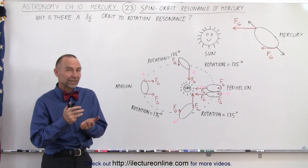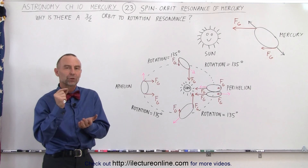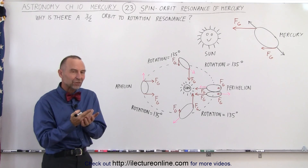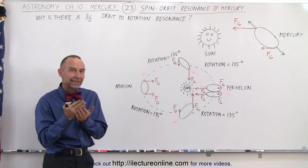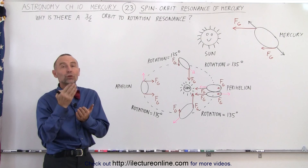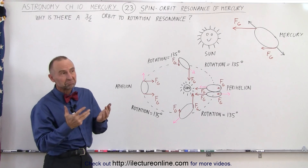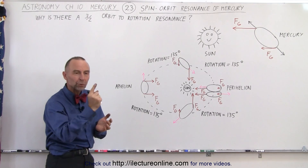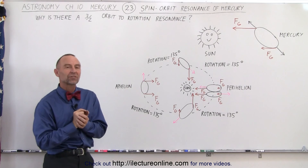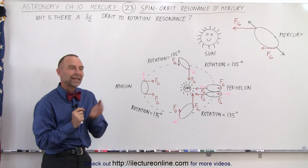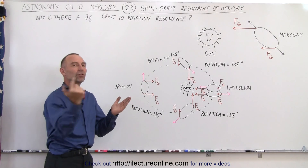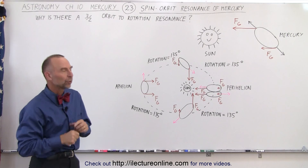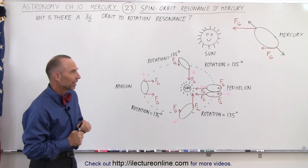It takes 88 days for Mercury to take one trip around the Sun, and it takes exactly two-thirds of that time for Mercury to make one rotation on its axis. So it takes one and a half times as long to make one trip around the Sun as it does to make one rotation on its axis.